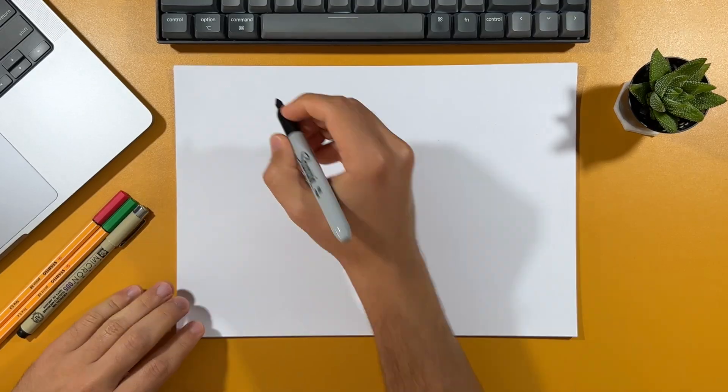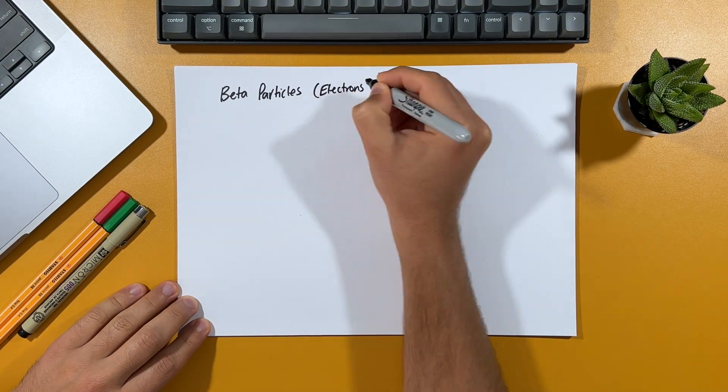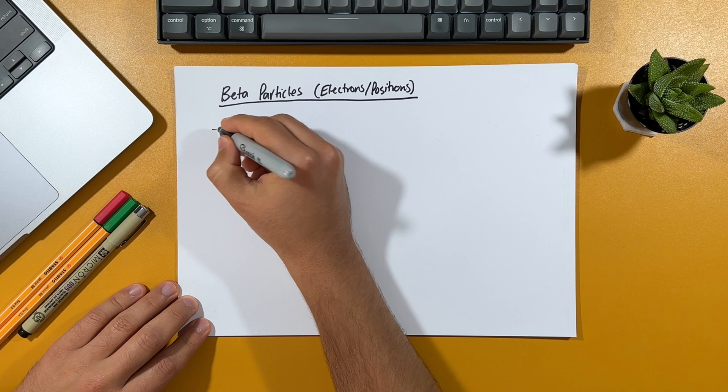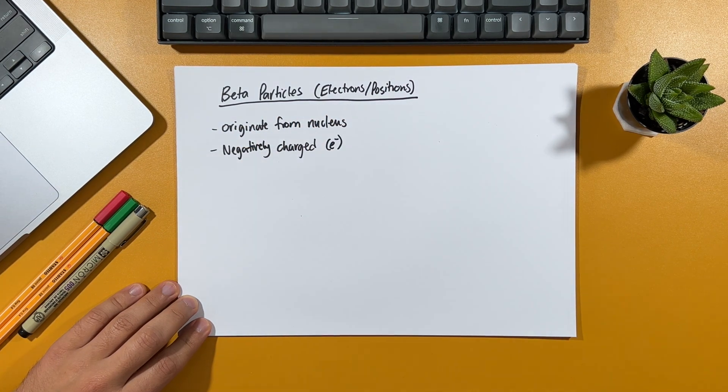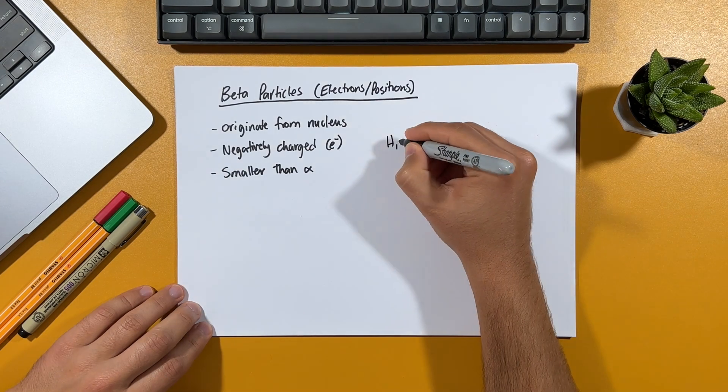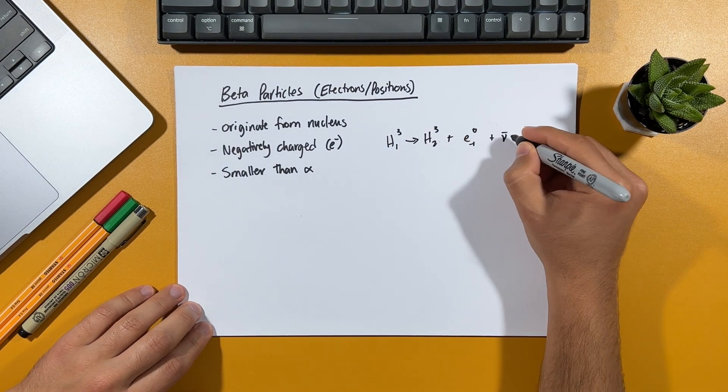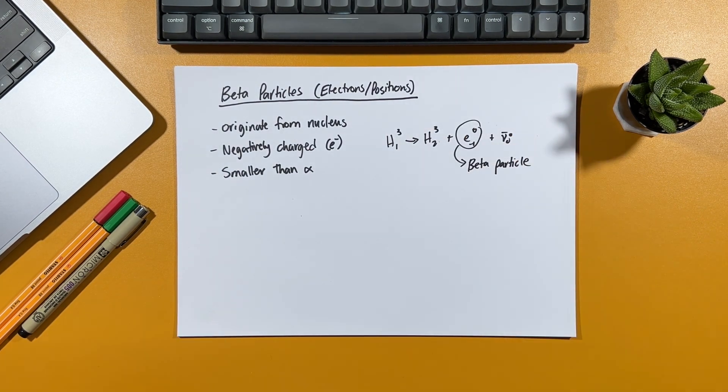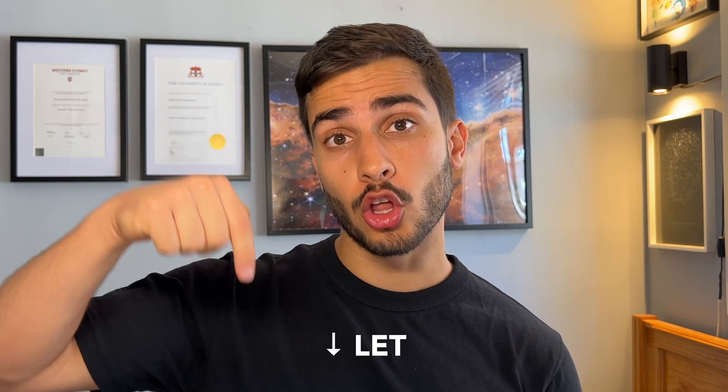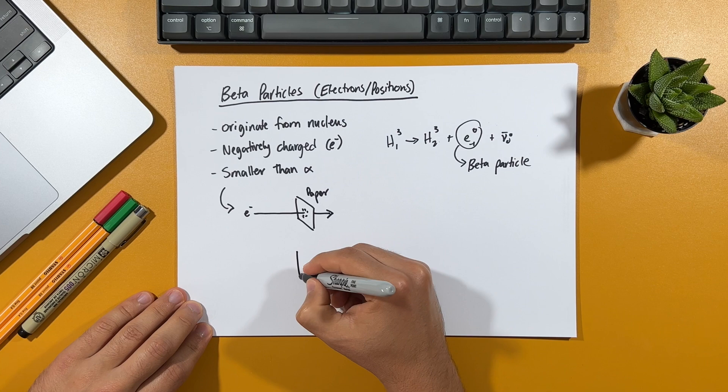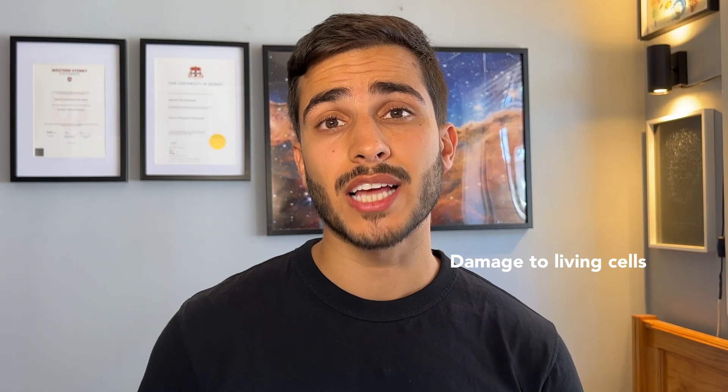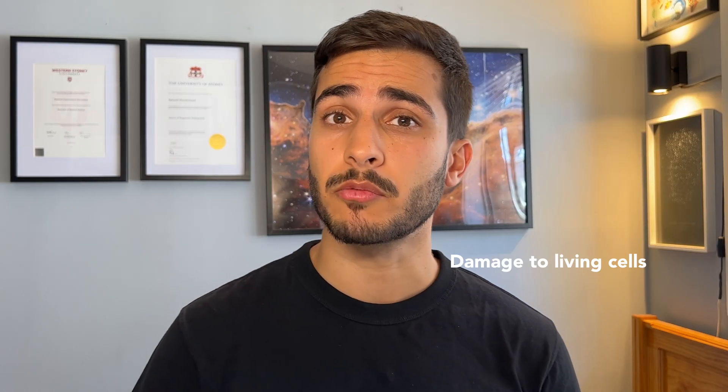Now let's talk about beta particles. Beta particles are electrons or positrons that originate from the nucleus of unstable atoms, and they have a high speed and energy. They have a negative charge and are much smaller than alpha particles, meaning they can penetrate a little further into matter. But although beta particles have a very low linear energy transfer, they can still be stopped by a thin sheet of metal, like a few millimeters of aluminum. They can also cause damage to living cells if they come into contact with them, but they're not as dangerous as alpha particles.